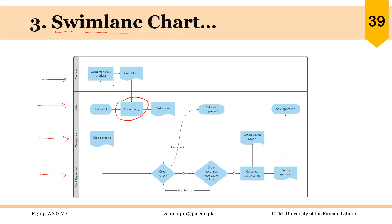You can notice other symbols as well. The arrow is the symbol for the flow of material or information. There is another symbol for the document or record — you can see credit form or order form, credit issue report — this is the symbol for a form or document. The oval-like shape shows the start or end of a process.